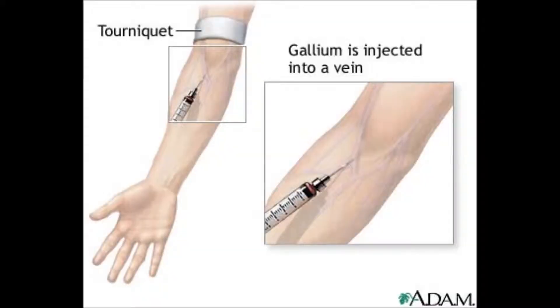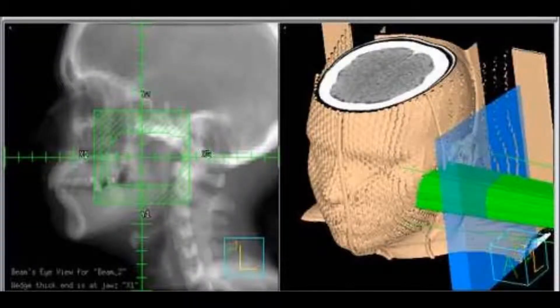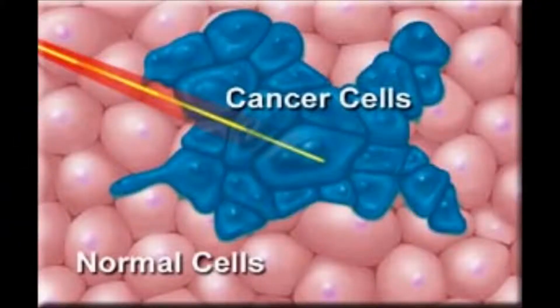Gallium-67 is first injected into the body, and the organ which receives the largest radiation dose is the bone surface. The patient would normally go through the testing facility 24 to 48 hours before the scan. After the injection, approximately 75% of the dose distributes into the bone, liver, bone marrow and soft tissues.